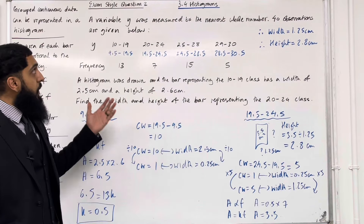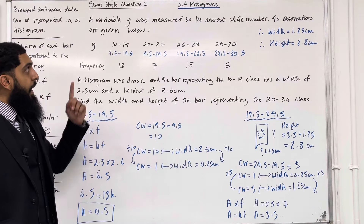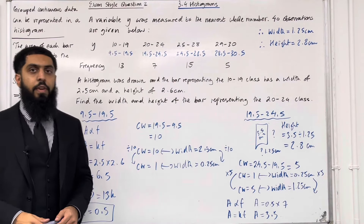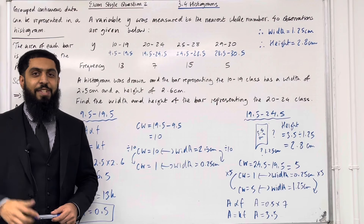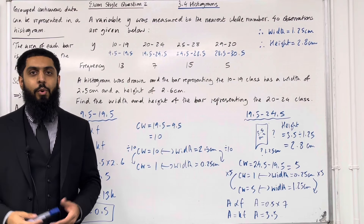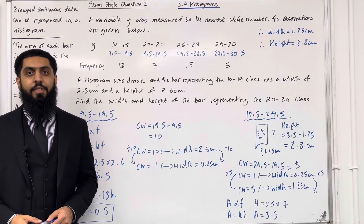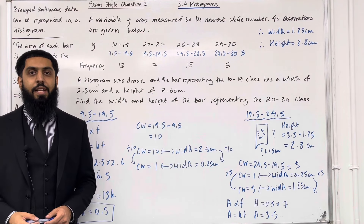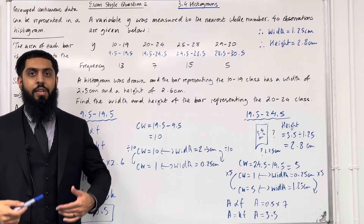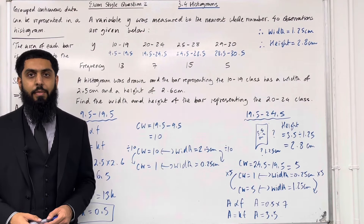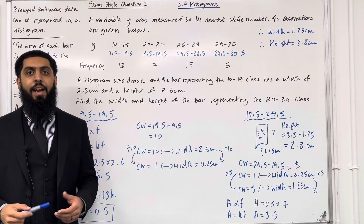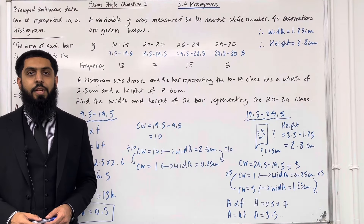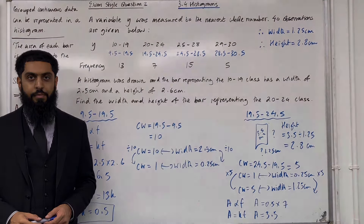Therefore the height of this class interval's bar is 2.8 cm. That completes exam-style question 2 and this teaching video on 3.4 Histograms. If you found the video useful, please subscribe, leave a like and a comment, and turn on your notification bell so you receive notifications every time I post a new teaching video. Thank you.